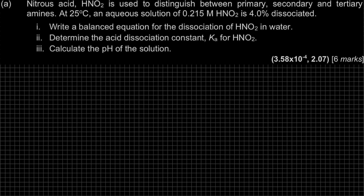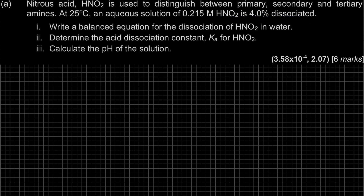Question A. Nitrous acid, HNO2, is used to distinguish between primary, secondary, and tertiary amine. At 25 degrees Celsius, an aqueous solution of 0.215 molar HNO2 is 4% dissociated.